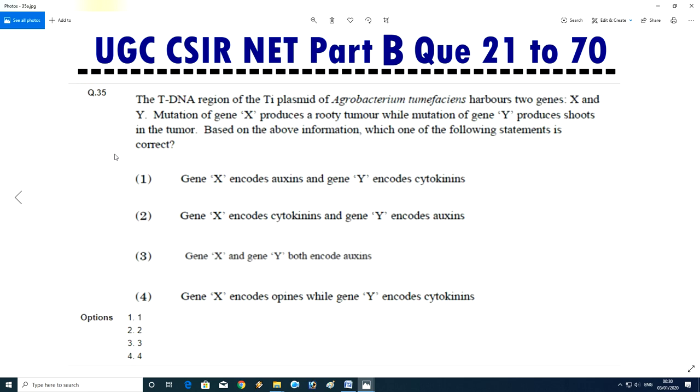Question No.36 - The T-DNA region of a Ti plasmid Agrobacterium tumefaciens harbors two genes, X and Y. Mutation of gene X produces a rooty tumor while mutation of Y gene produces shoot in the tumor. Based on the above information, which of the following statement is correct? Gene X encodes auxin and gene Y encodes cytokinin. Gene X encodes cytokinin, gene Y encodes auxin. Gene X and gene Y both encode auxins. Gene X encodes opines while gene Y encodes cytokinin. Answer is B. Gene X encodes cytokinin, gene Y encodes auxin.